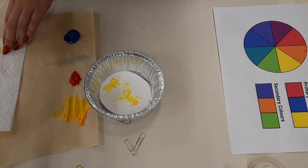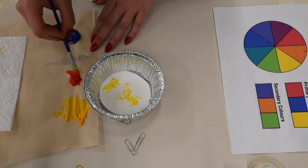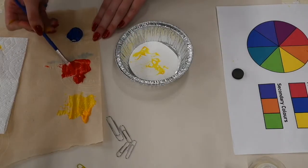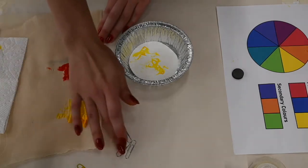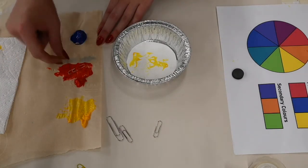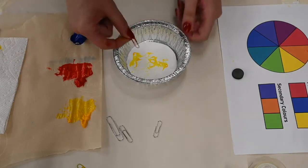I'm going to rinse my brush and then add water to my red. Okay, so now that I've watered down my red paint, I'm going to grab another paper clip and toss it in there. And then I'm just going to repeat the exact same process that I did for the yellow.